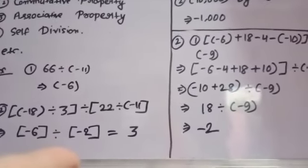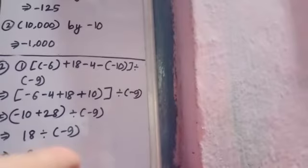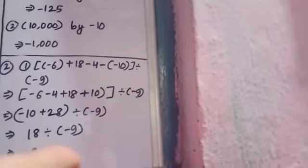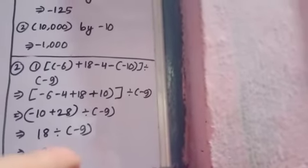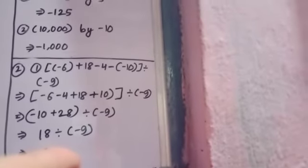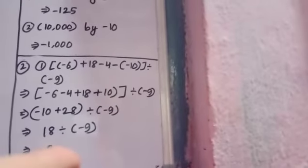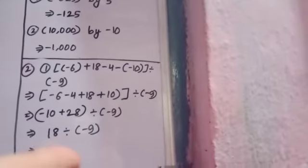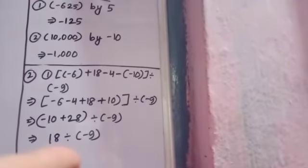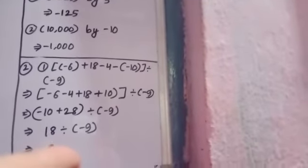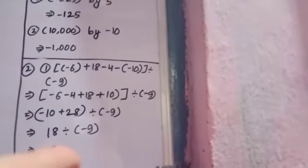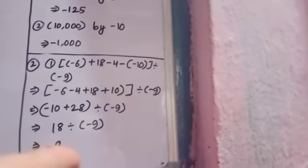So minus 6 plus 18 minus 4 minus inside bracket minus 10 in big bracket division minus 9. So what we will do? First of all, we will put all the values which are of similar sign all together. That is minus 6 minus 4, and then we will write plus 18 plus 10, minus minus equals plus, plus 10, divisible by minus 9.